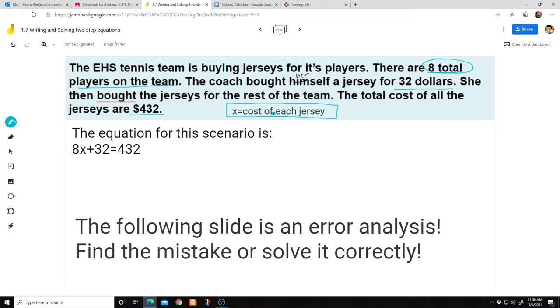So I want you to think about this for a moment. What is the coach doing? She is buying jerseys. The coach is buying eight jerseys. There's eight players, and she's buying jerseys for all eight players. So it's going to be 8X, because the X is the cost of each jersey. The coach bought herself a jersey for $32. It's just a one-time payment. So plus 32. And then the total cost is 432. And now we got to figure out how much does each jersey cost if the total cost was 432. So we need to solve it.